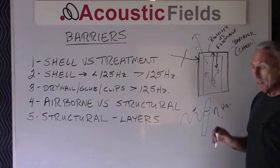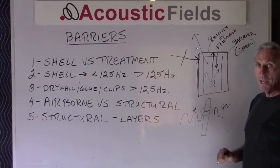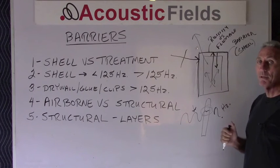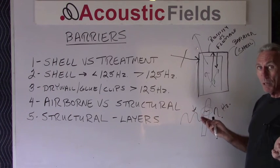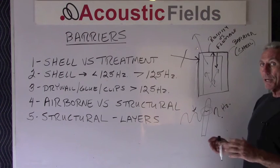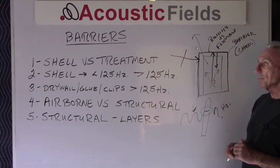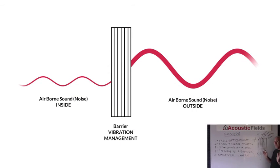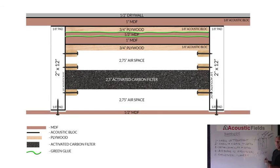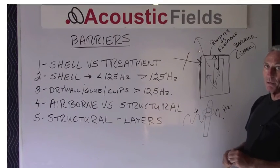It's a layered approach — barriers are layered because we're dealing with different vibrational energy versus airborne. Graphic five shows us that airborne energy strikes our barrier and then it becomes vibrational energy. The approach we have to use is different from absorption and diffusion treatment on the inside of the room. Graphic six shows us it's a layered approach because we're trying to reduce vibrations. We provide a series of layers that the vibrational energy has to go through, we select the correct densities of those layers, we arrange them in the correct way, and then we'll achieve a pretty good result.